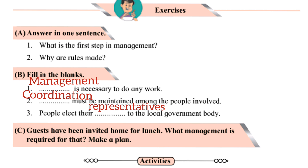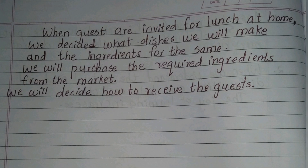The answer is representatives. Now see this question: guests have been invited home for lunch — what management is required for that? Answer: when guests are invited for lunch at home, decide what dishes we will make and the ingredients for the same. We will purchase the required ingredients from the market. We will decide how to receive the guests.